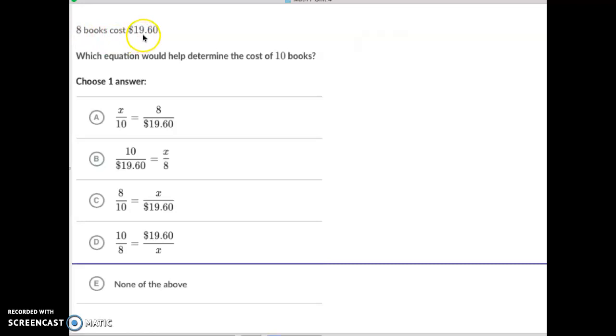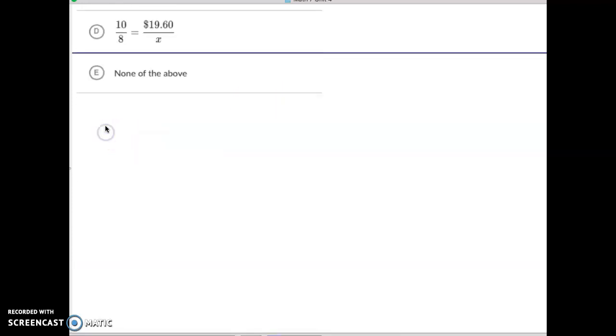All right, this one says 8 books cost $19.60. Which equation would help determine the cost of 10 books? I want you to understand something. This 8 goes with this number $19.60. And because 8 is a book and 10 is a book, the 8 and the 10 go together. The 8 goes with the $19.60 and the 8 goes with the 10. You could do it either way here. Notice that when we do this, the 8 and the X are always in opposite corners from each other.